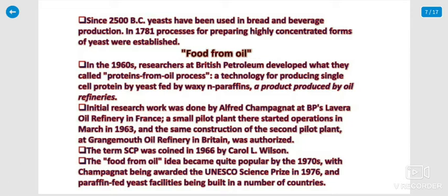Since 2500 BC, yeast was most used in bread and beverages. In 1781, the process of preparing highly concentrated yeast was established. In 1960, British Petroleum developed what they called the 'protein from oil' process. Its initial research work was done by Alfred Champagnat. The term SCP was coined in 1966.